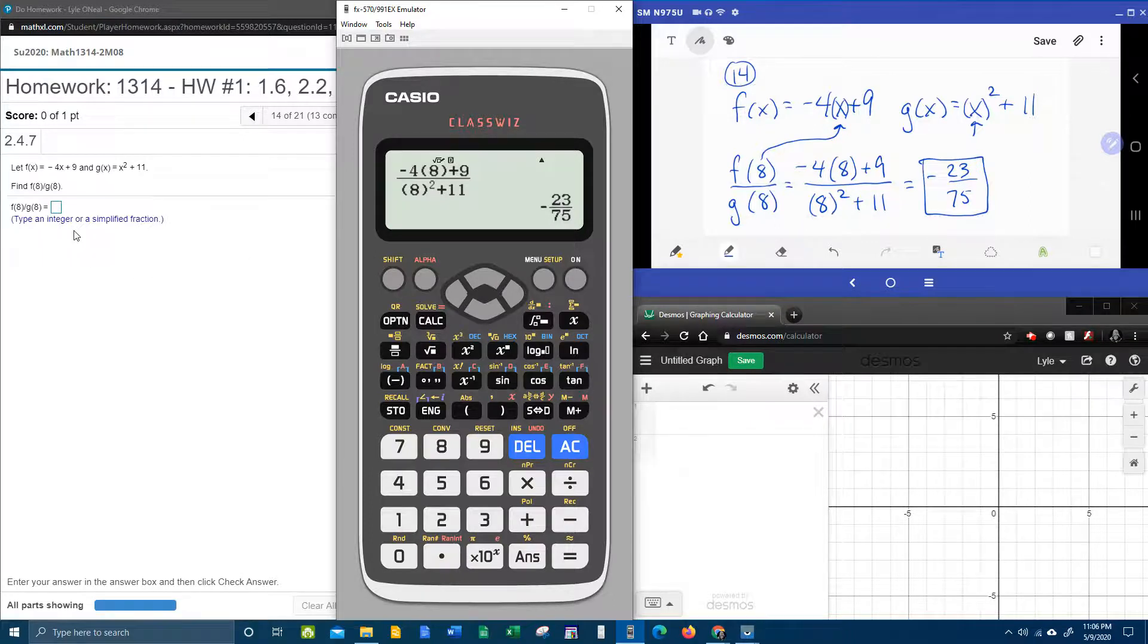And if the problem would have asked for a decimal, this button right here, the SD button, will make that a decimal. But it does want a simplified fraction.